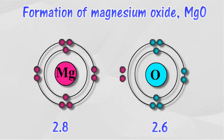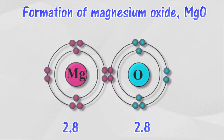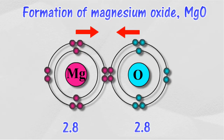Oxygen atom receives 2 electrons to form a negatively charged oxide ion. Oxide ion achieves a stable electron arrangement of 2.8. A strong electrostatic force pulls the magnesium ion and the oxide ion together, and an ionic bond is formed.